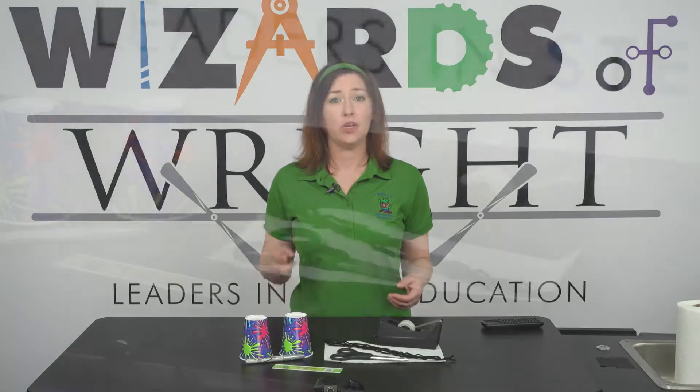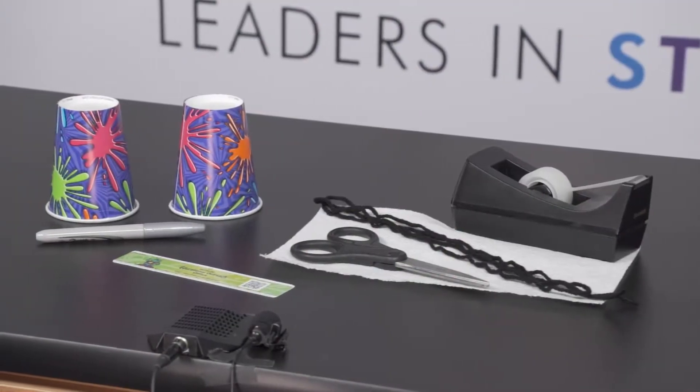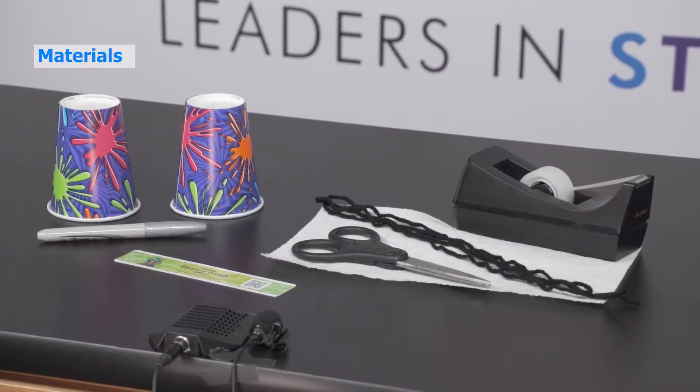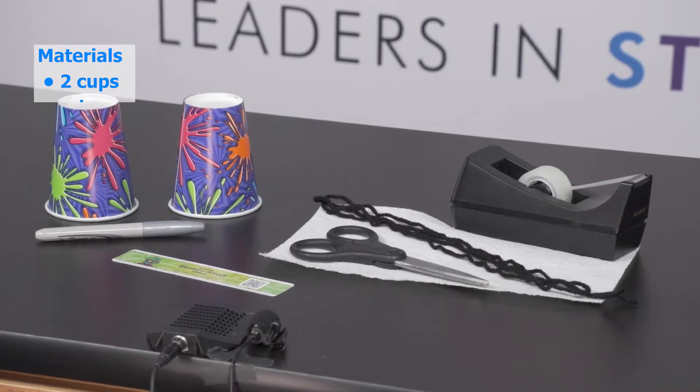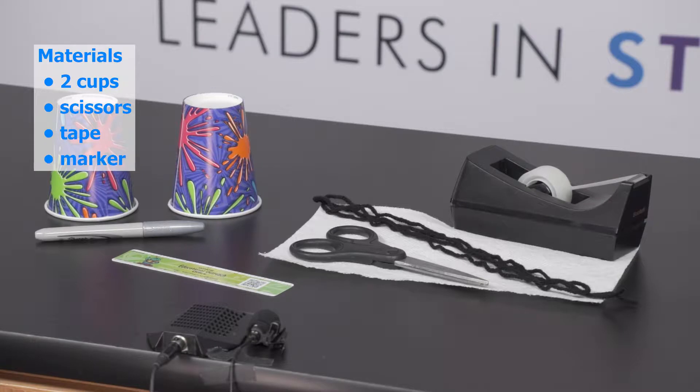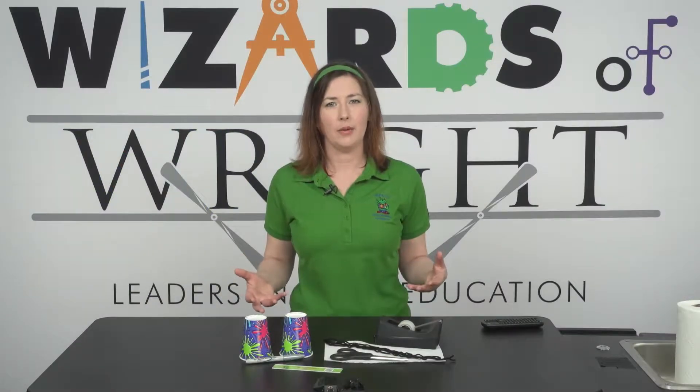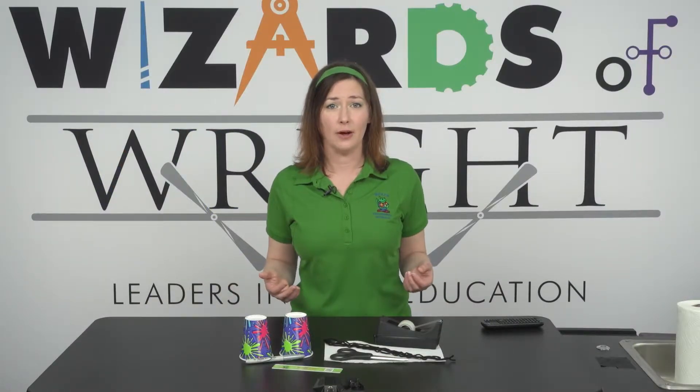To do this you will need two paper or styrofoam cups, a pair of scissors, some tape, either scotch or masking tape will work, a pencil or marker. I will use a marker so that you can see what I'm doing better. We also need some string or yarn. We need enough to be able to cut three pieces each about six inches long.